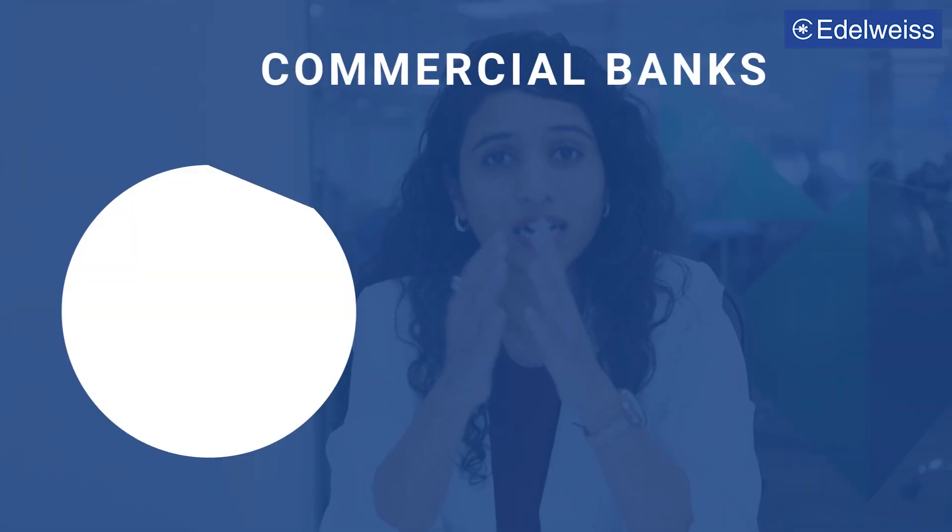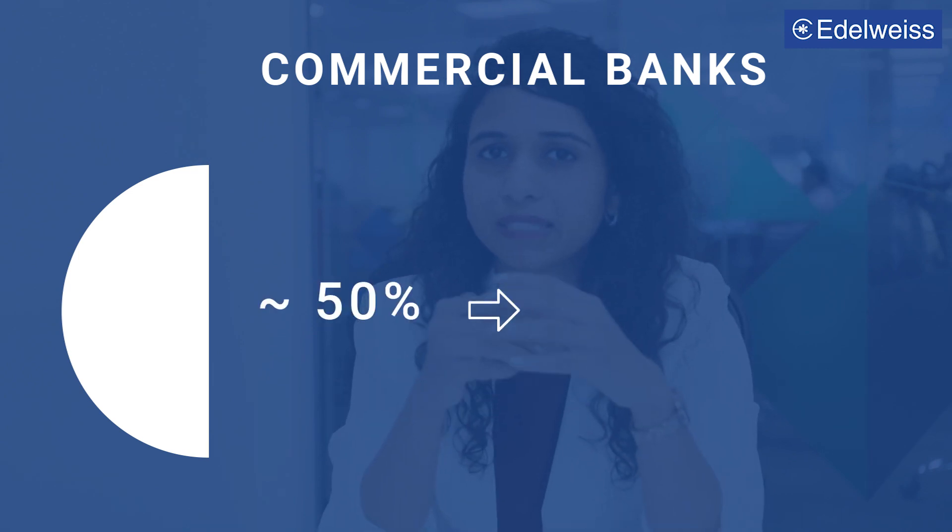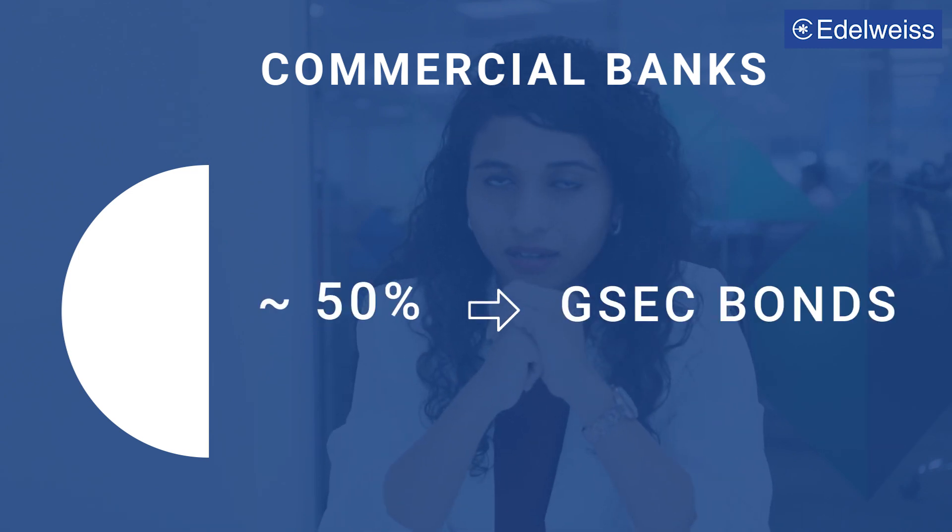The third important factor is liquidity. Commercial banks hold about 50% of all GSEC holdings. When interbank liquidity is low, they sell their GSEC holdings in the market to get cash to finance their lending and other activities. When interbank liquidity is in surplus, they stop this activity. This means that the supply of bonds in the GSEC market falls and therefore the price rises.